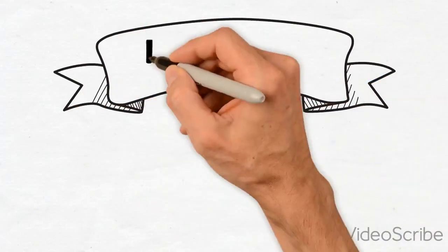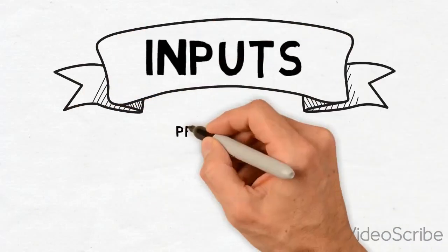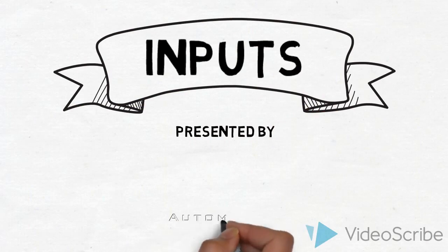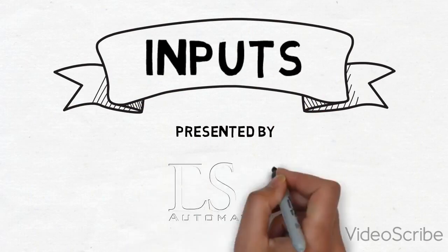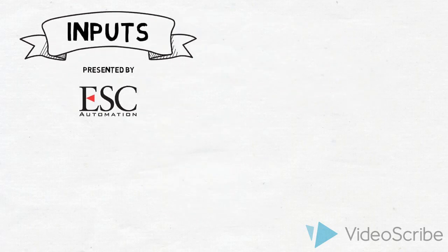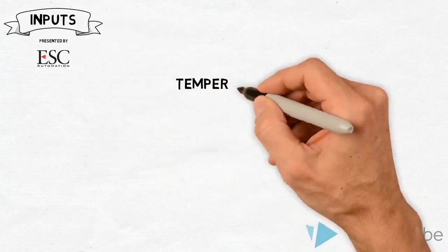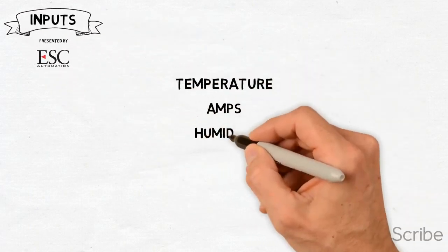We wanted to put together a video about inputs and how they work on a DDC panel. There are lots of different types of devices that we tie to a panel and get information from—devices that give us temperature, amps, humidity, and pressure.